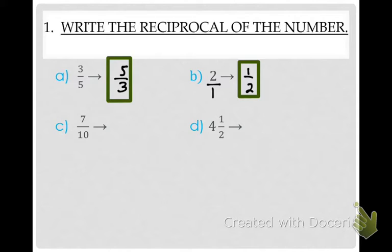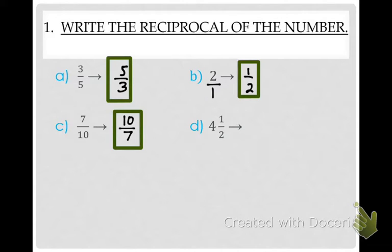Problem C says seven-tenths. What would that be for the reciprocal? Ten-sevenths. Ten-sevenths is correct. The next one is one of those more difficult ones — it's a mixed number. I would first have to turn that into an improper fraction. Jocelyn, what would that be as an improper fraction? Nine over two. Very good. And now tell me, what would that reciprocal be? Two over nine.